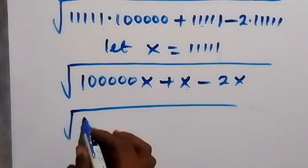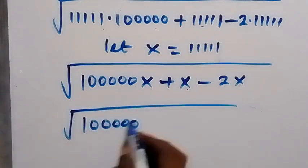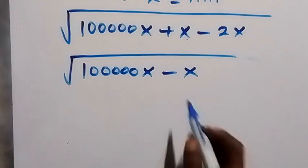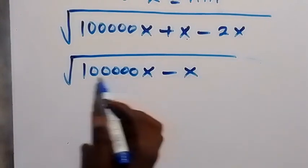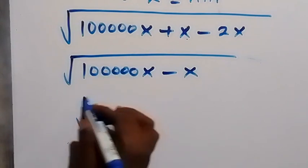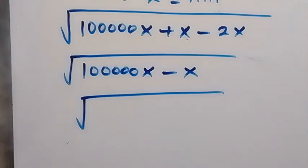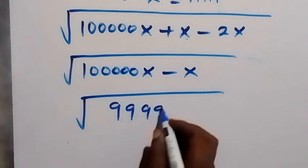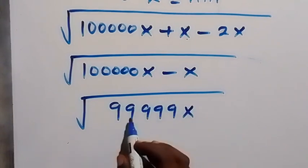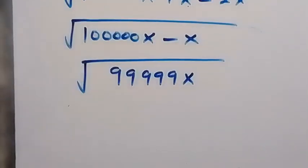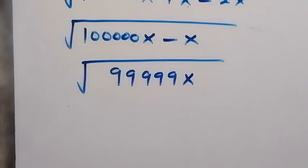So we have the square root of 100,000x minus x. When we subtract 1x from 100,000x, that means we subtract 1 from 100,000, which gives us 99,999. So this becomes the square root of 99,999x. Since we subtracted, we have 99,999x here.